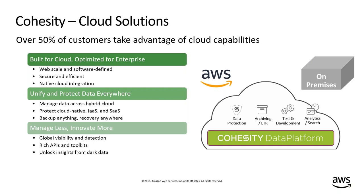The Cohesity data platform is a software-defined platform built from the ground up for the cloud — the cloud was never an afterthought. It's the same software that runs on-premises and also runs on AWS on EC2. It's built on a web-scale modern architecture that originated from the same architect and founder who worked on the Google File System, allowing tremendous web scale on the back end while enabling customers to deploy both on-premises and in the cloud.